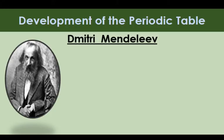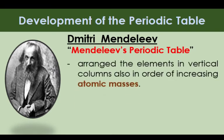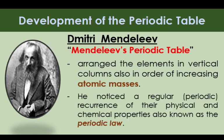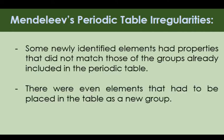Next was Dmitri Mendeleev, known for his Mendeleev's Periodic Table. He arranged the elements in vertical columns in order of increasing atomic masses and noticed a regular, or periodic, recurrence of their physical and chemical properties — also known as the Periodic Law. However, like Newlands and Dobereiner, Mendeleev's Periodic Table also had irregularities. Some newly identified elements had properties that did not match those of the groups already included, and there were elements that had to be placed as a new group.